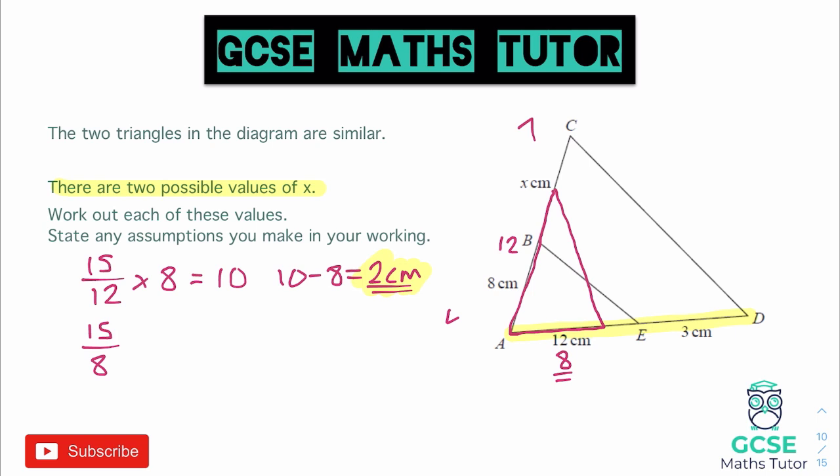So that's our new scale factor, and now we're going to have to multiply it by 12, to get the full length of the triangle. So if we multiply it by 12, 15 over 8, multiply by 12, and let's type that in on the calculator.